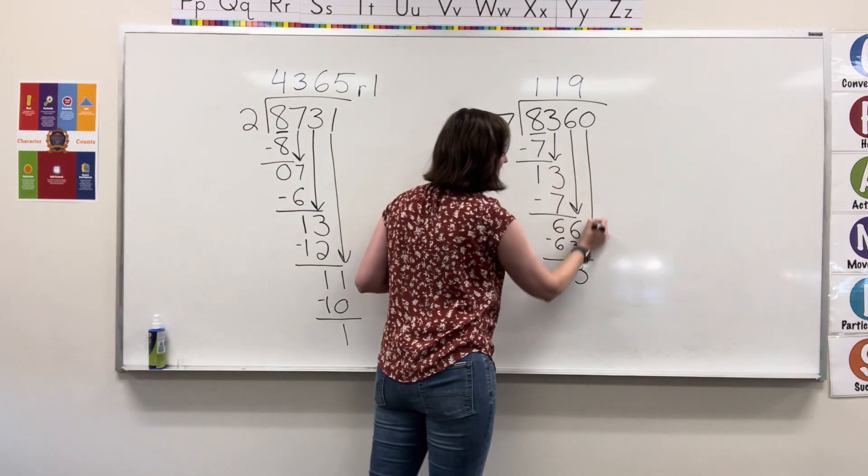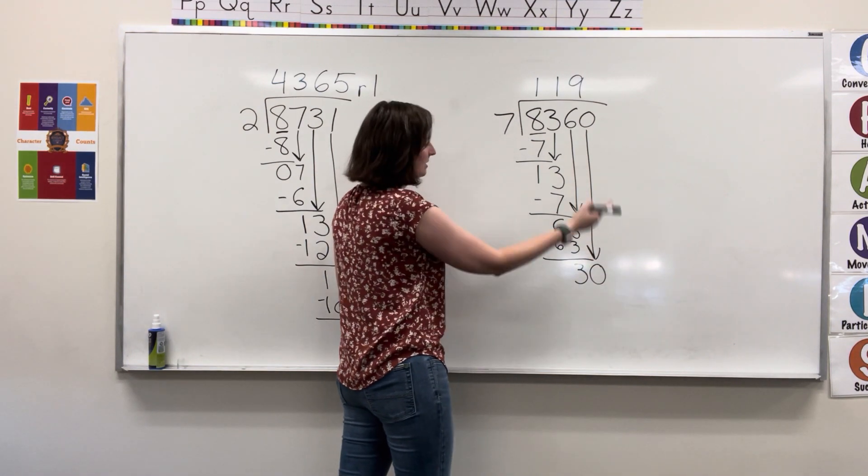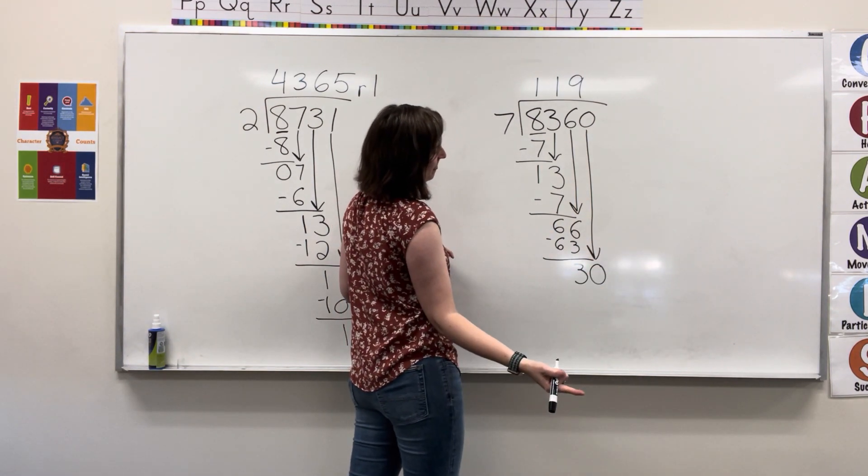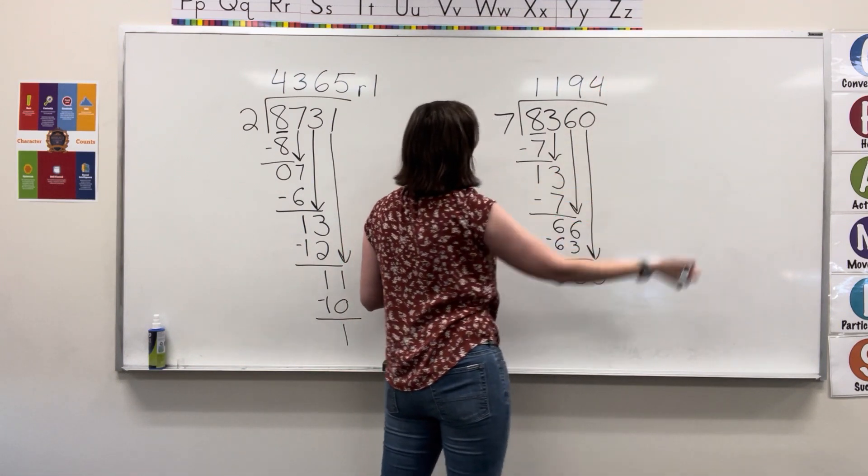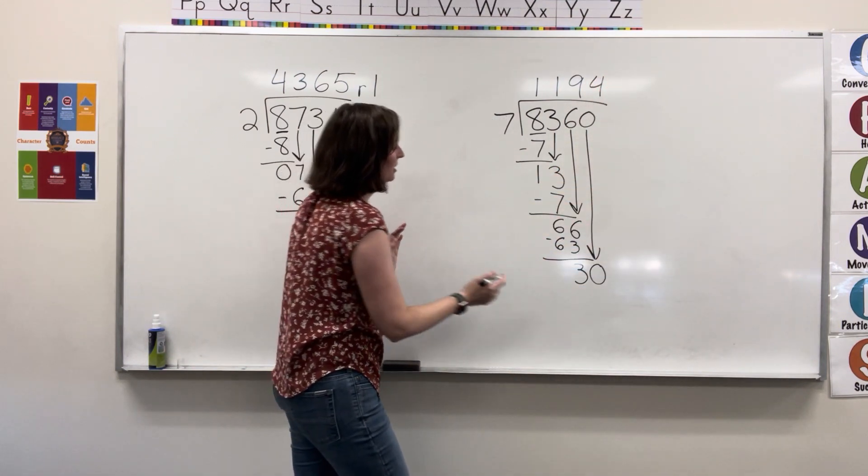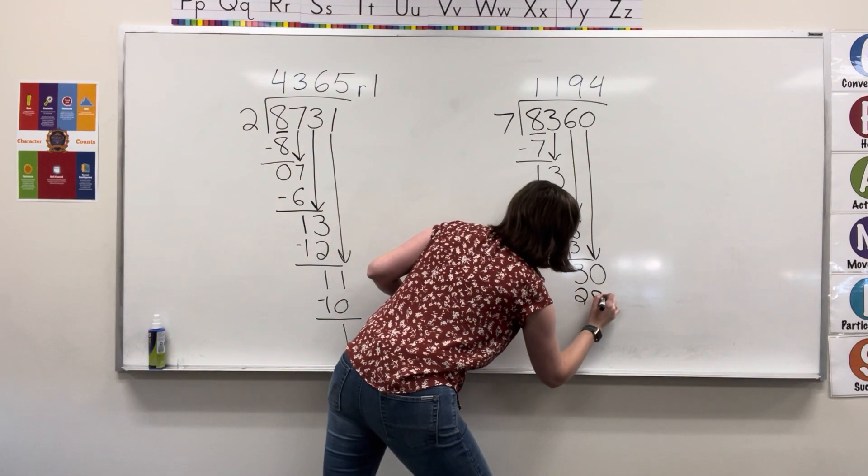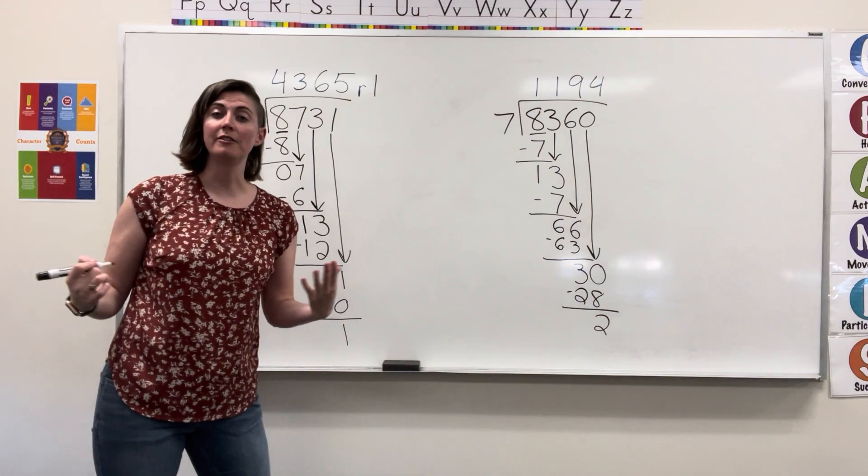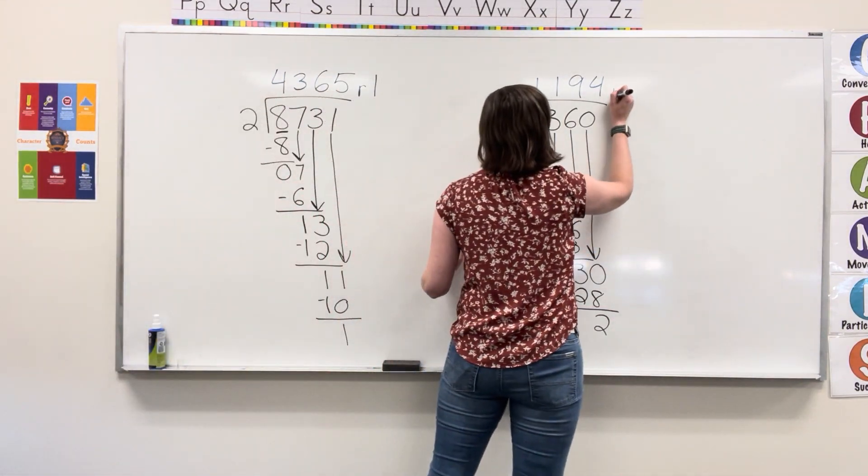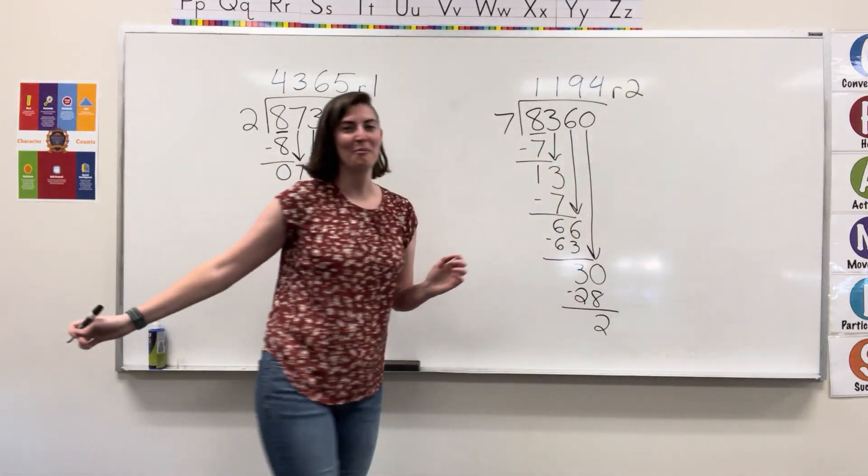I bring down the zero. Seven fits into thirty four times. Seven times four is twenty-eight. I subtract and I'm left with a remainder of two. So I have to include that in my quotient.